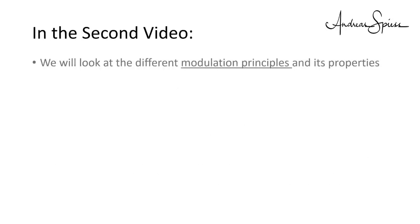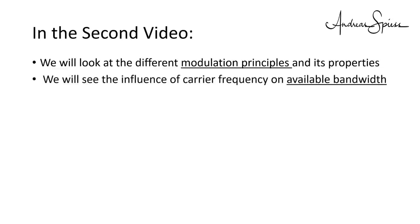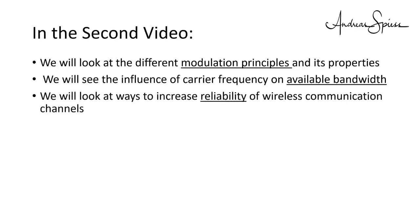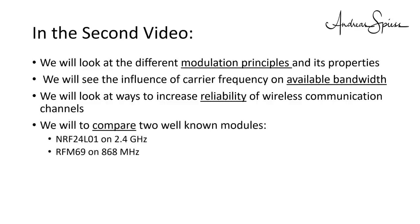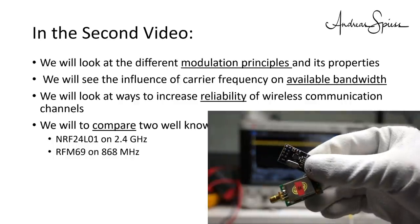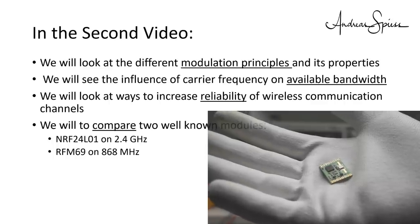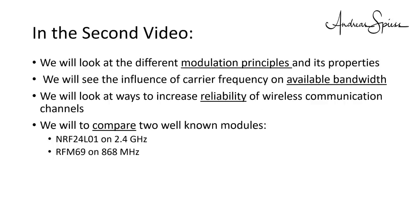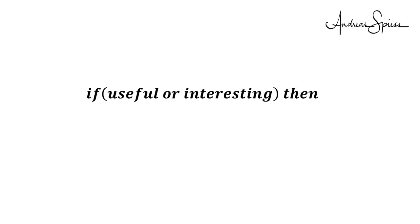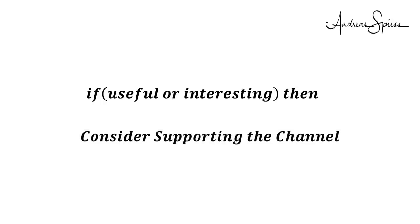In the second part, we will look at the different modulation principles and their properties, and we will see the influence of carrier frequency on available bandwidth. We will also look at ways to increase reliability of wireless communication channels. At the end, we will compare two well-known modules: a NRF24L01 on 2.4 GHz and a RFM69 on 868 MHz. I hope this video was useful or at least interesting for you — if so, please consider supporting the channel to secure its future existence. You find the links in the description. Thank you. Bye.